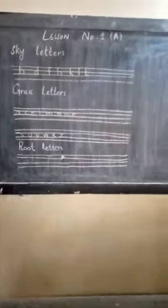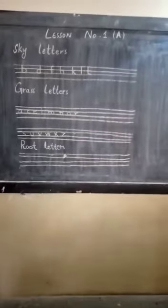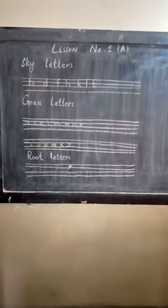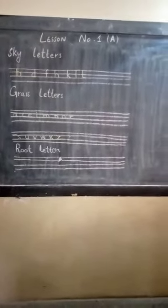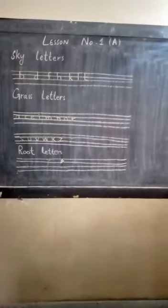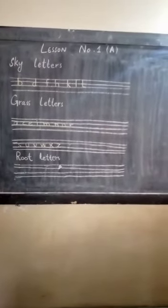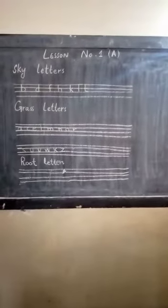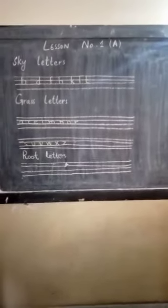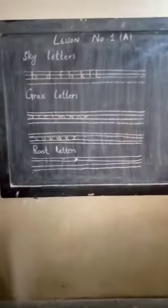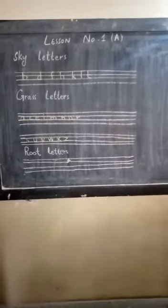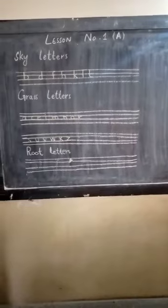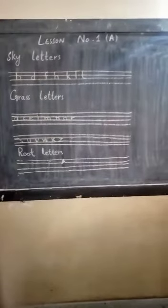As you can see, students, grass letters — we have 14 — are written on the two middle lines of your four lines. Now, lastly, we have root letters. Root letters are those letters which are written on the bottom three lines of your four lines; in other words, letters that we write on the lower three lines, having a stem that goes down below the line.